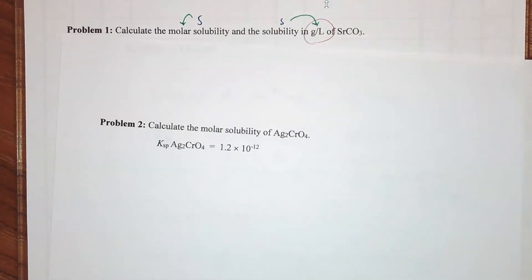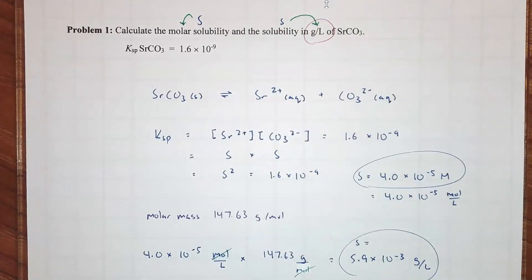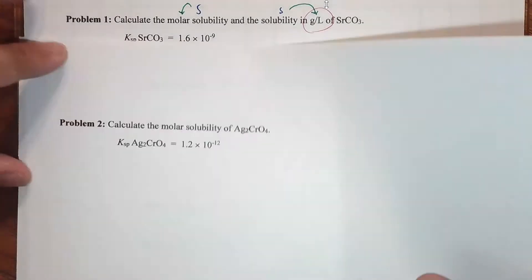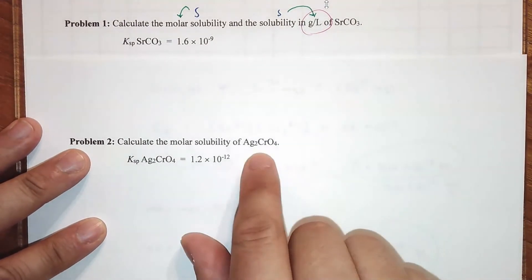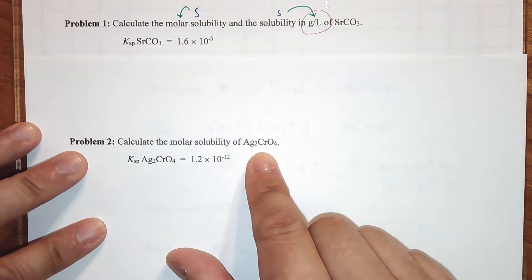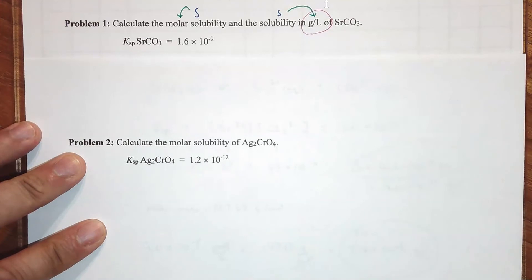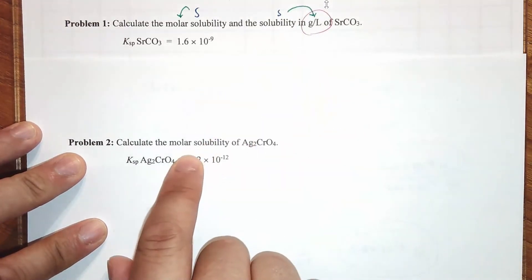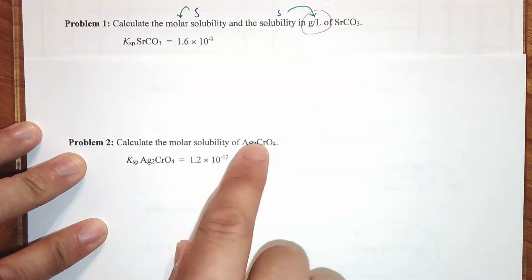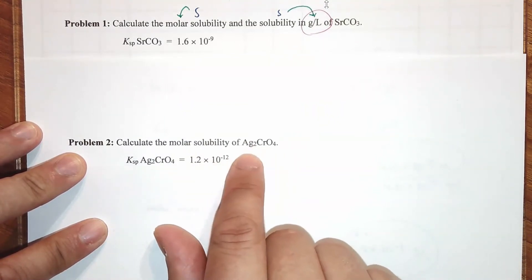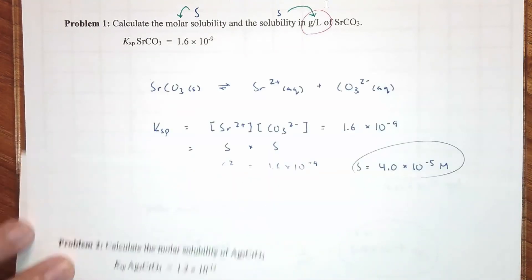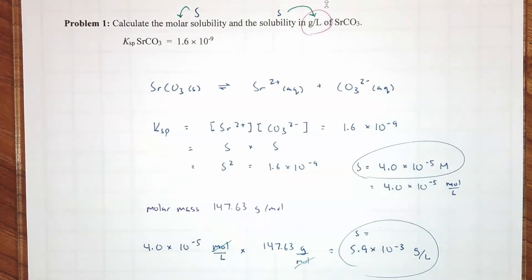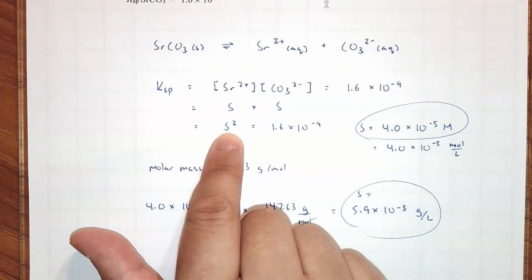Okay, good. These two are good. Now, take a look at problem number two. Problem number two says that now we're working with this salt. What is that? That's silver chromate. And is this a huge difference? Well, here I'm not asking for the solubility. I'm just asking for the molar solubility. But look at the stoichiometry. Look at the ratio of ions.